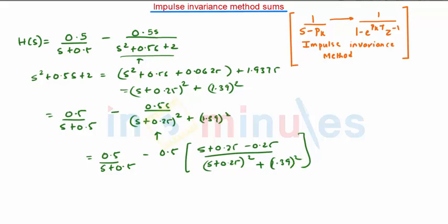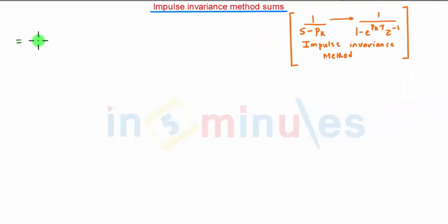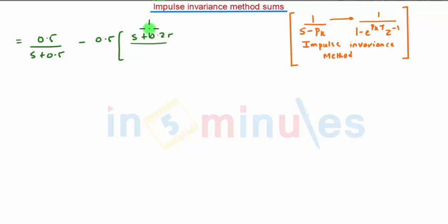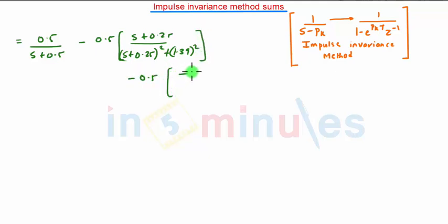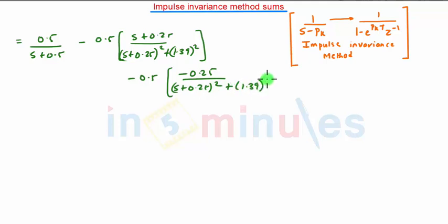Now, as we have separated the terms, we will finally get H(s) equal to 0.5 upon s plus 0.5, minus 0.5 into s plus 0.25 upon (s plus 0.25) whole squared plus 1.39 squared, and again minus 0.5 bracket minus 0.25 in the denominator, same term: (s plus 0.25) whole squared plus 1.39 squared.